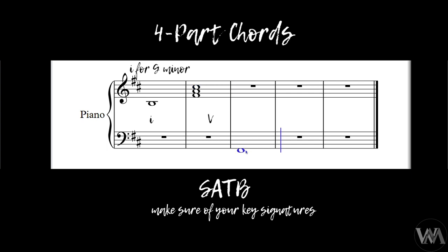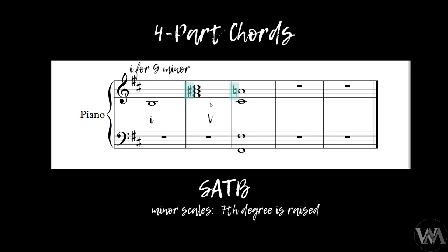We're going to start on F sharp. We can double the F sharp in the bass, and for the tenor we're also going to have an F sharp. Then C sharp for the alto — that is an acceptable note for the alto — followed by an A. But what's wrong here? We have to remember that in a minor scale the seventh degree is always raised. When we work with the dominant in minor keys, we must raise that seventh degree. The seventh degree of B minor is A, so it becomes A sharp — we have to raise that degree, otherwise the chord won't sound correct.